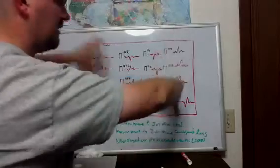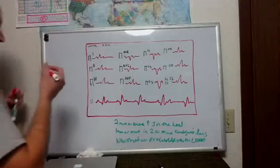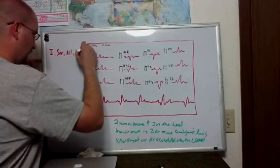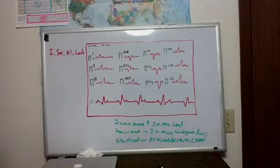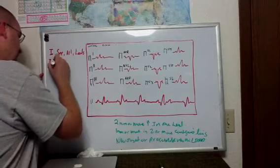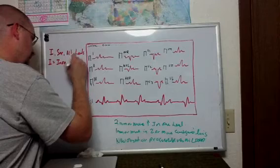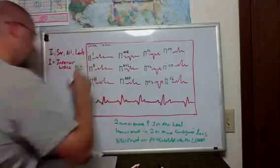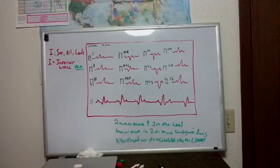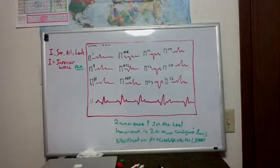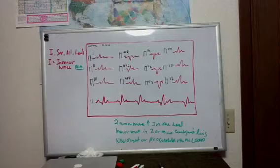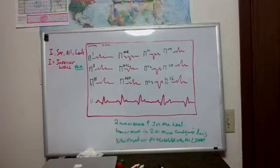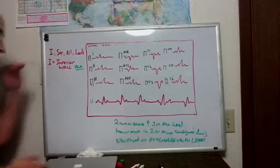How do we make sense of what leads are looking at what area of the heart? What I always remember is something called I see all leads. I just think that whenever I see a 12 lead, and that's exactly how I look at my leads. So I start off with I, and that's the inferior, the inferior wall. What coronary artery are we talking about in this case? We're talking about the right coronary artery.